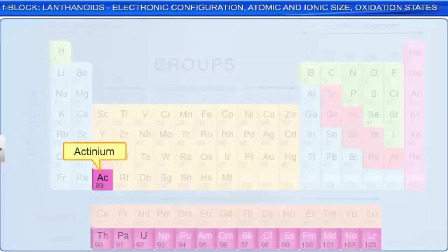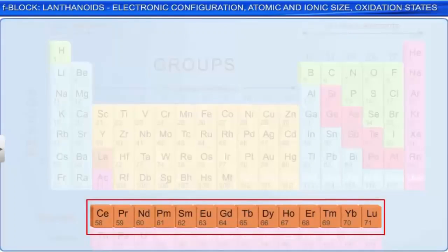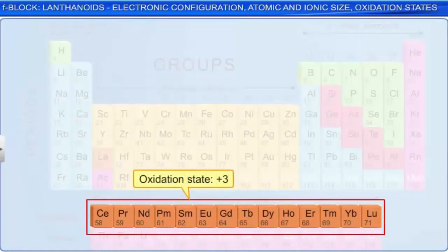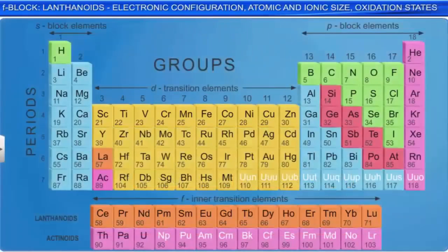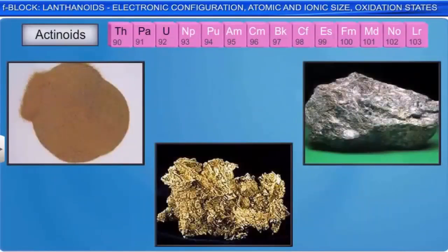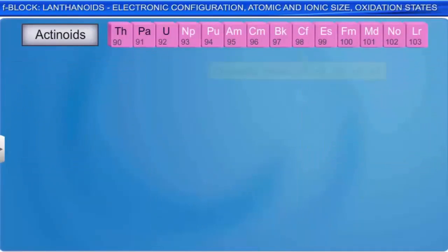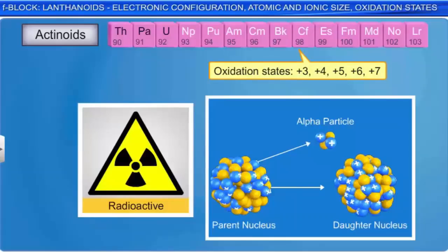Since lanthanoids effectively have only one stable oxidation state, plus 3, they resemble each other more closely than do a horizontal row of the transition elements. The chemistry of actinoids, on the other hand, is complicated. The complication is partly due to the occurrence of a wide range of oxidation states, and partly due to their radioactive properties. Now let us first take up the lanthanoids.